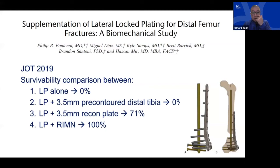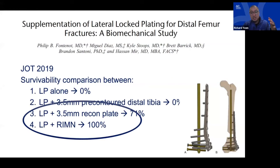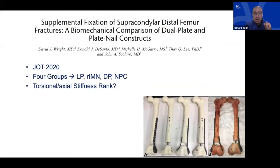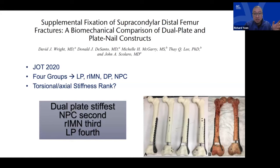Biomechanical evidence from a Tampa paper shows that supplementing a locked implant with a nail or even just adding a secondary recon plate significantly improves survivability to failure. Adding a second implant minimizes complete hardware failure. We're in a race to hardware failure versus fracture healing, and dual implants allow us to win that race more often. A 2020 JLT paper showed dual plating had the highest stiffness, nail-plate second, and isolated constructs were third and fourth.